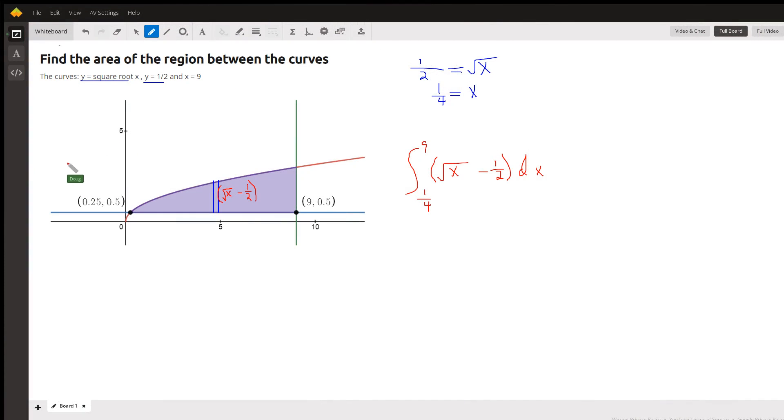This graph depicts the area in question. This curve is y equals the square root of x. The line y equals one-half is a horizontal line right here. To find the point of intersection, when does one-half equal the square root of x? Square both sides, and x equals one-fourth. That's this point right here, and we go all the way across to x equals nine.